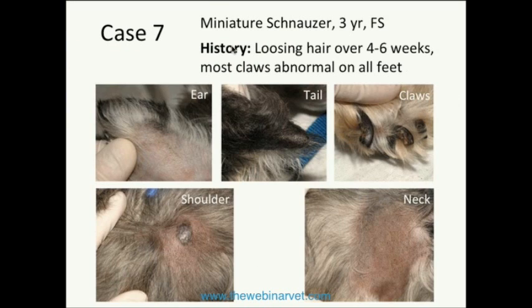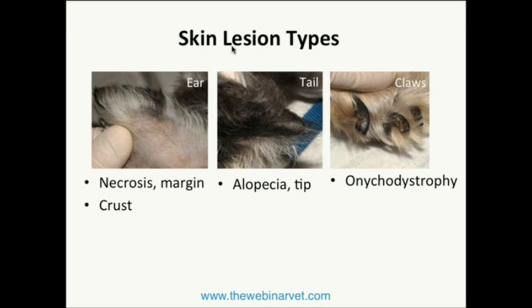Case 7: a miniature schnauzer, 3-year-old female spayed, with a history of losing hair over four to six weeks and most claws abnormal on all feet. On the ear tip margin, there's a dark brown area suggesting early necrosis or evolving crust — its location on the ear tip margin is a clue to a possible vascular lesion. Combined with alopecia on the tip of the tail and onychodystrophy affecting most claws with irregular, deformed surfaces and possible sloughing — these are all extremity lesions pointing toward vascular disease.